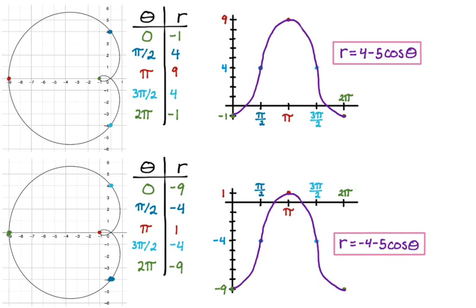So it's possible to write two equations for each of these. Once you've done a lot of them, two equations kind of jump out at you. In this example, the top one is the more traditional. The bottom one is something you end up with if you just go in and start picking points, r's, and thetas. Go with whichever works for you. I hope you found this helpful — good luck.